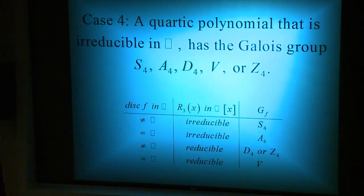If there is a quartic polynomial which is irreducible in the rationals, then it has the Galois group S4, A4, D4, the Klein 4 group, which is the symbol V, or Z4.